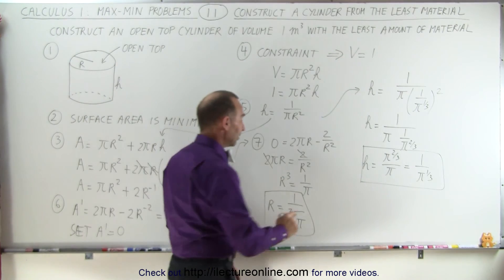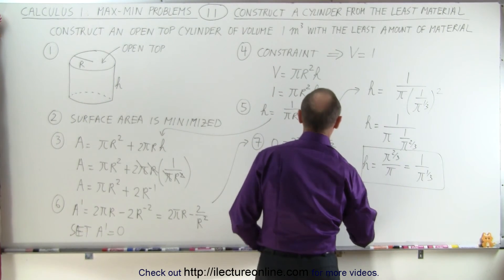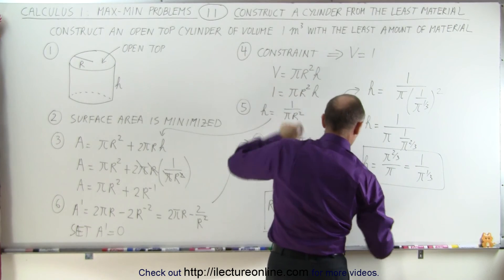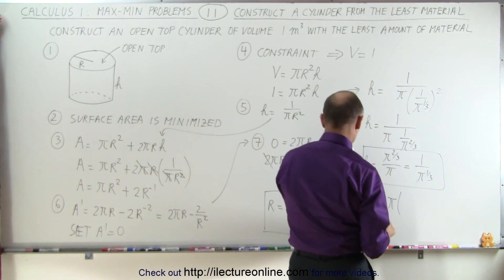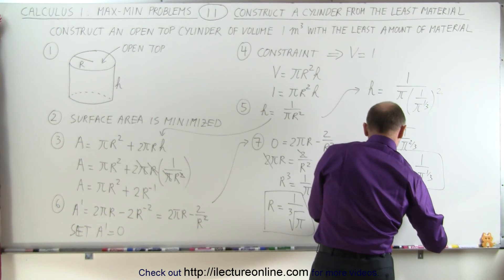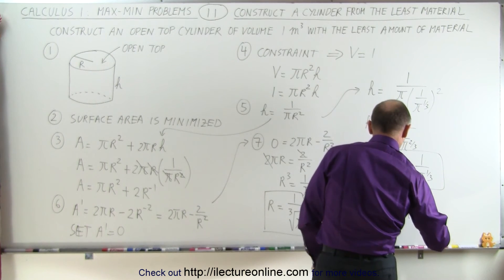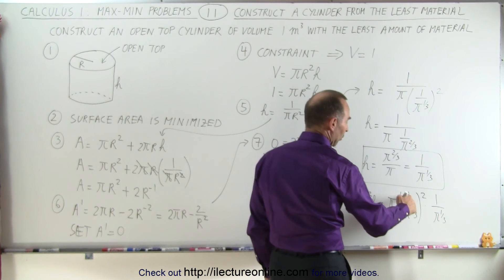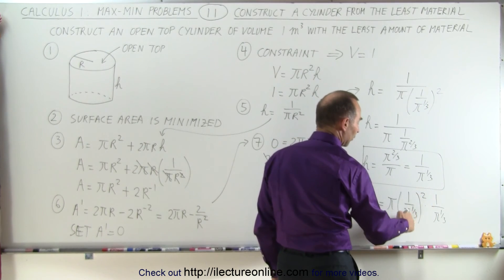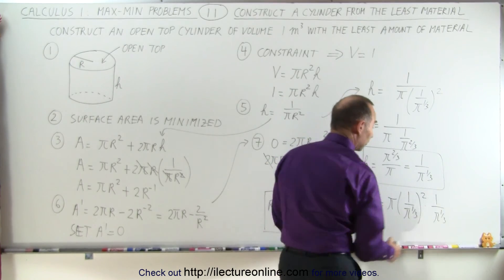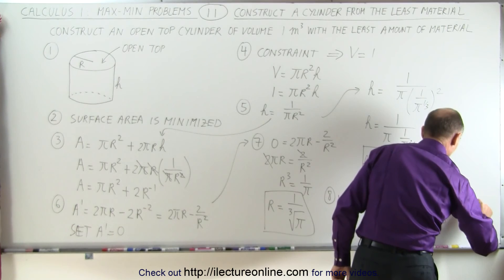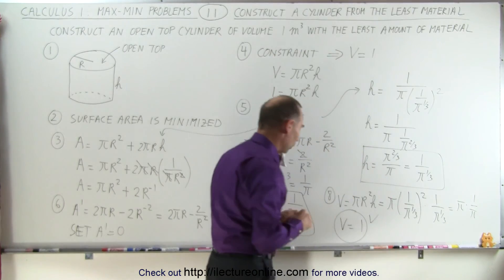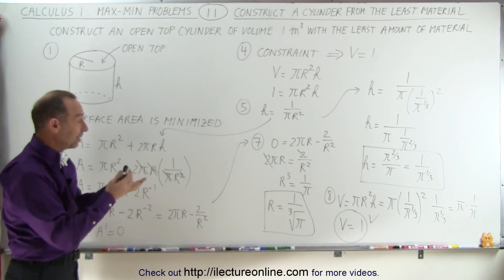Final check to see if we have this correct. We know that the volume should add up to 1, and the volume is equal to pi r squared h. You can see here that 1 over pi to the 1 third squared is 1 over pi to the 2 thirds, times 1 over pi to the 1 third, which is 1 over pi. So we end up with pi times 1 over pi, and we can see that volume is indeed equal to 1, which is one of the initial constraints that we got. So the answer is actually correct.